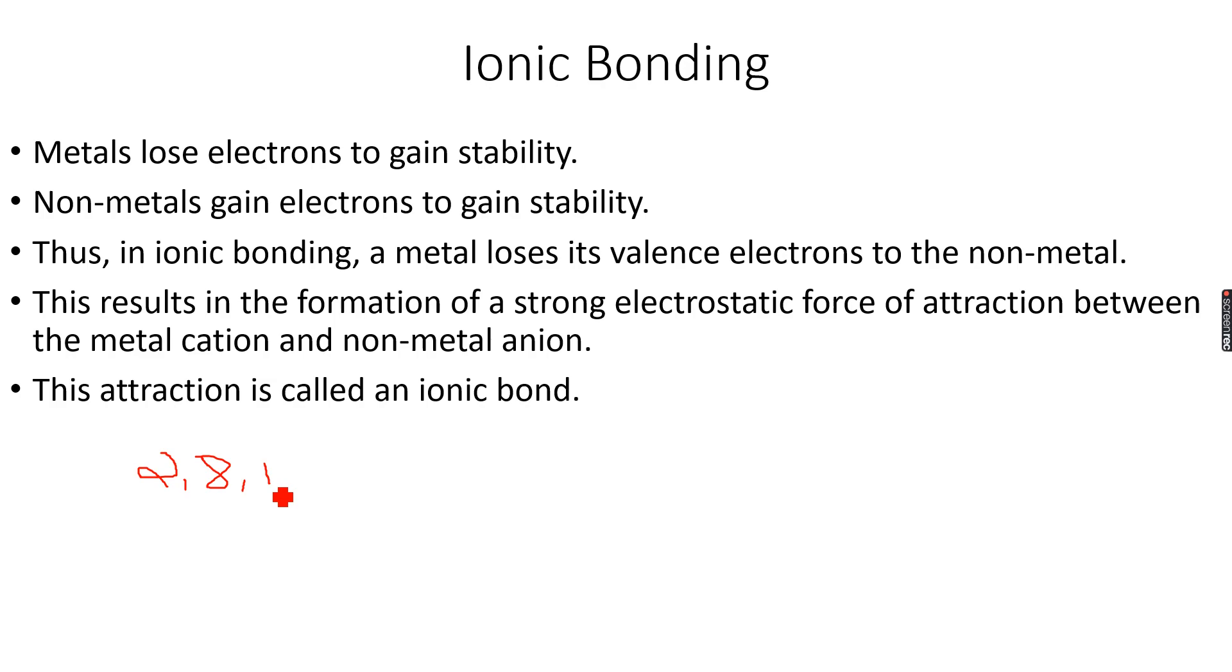So it has one electron in its outermost shell - this is the valence electron. The valence electron is the electron in the outermost shell.